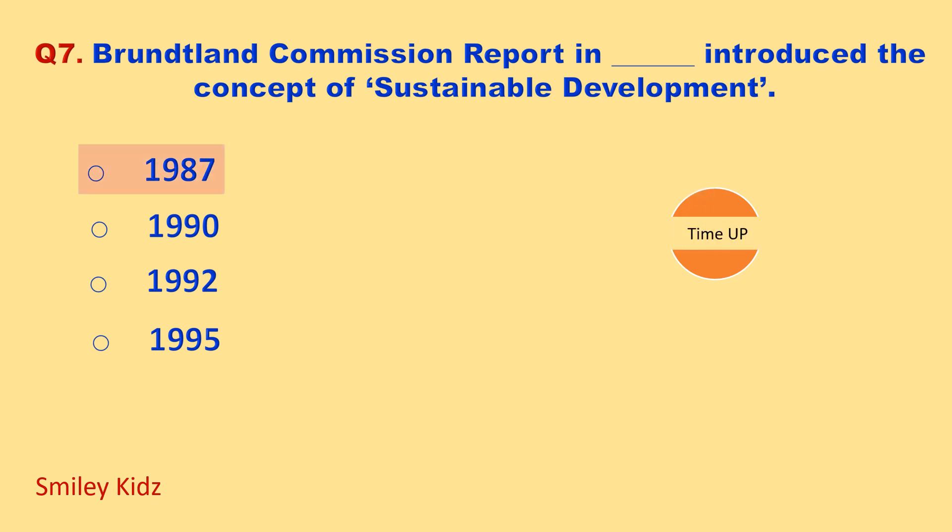Time up. The correct answer is 1987. The Brundtland Commission report in 1987 introduced the concept of sustainable development.